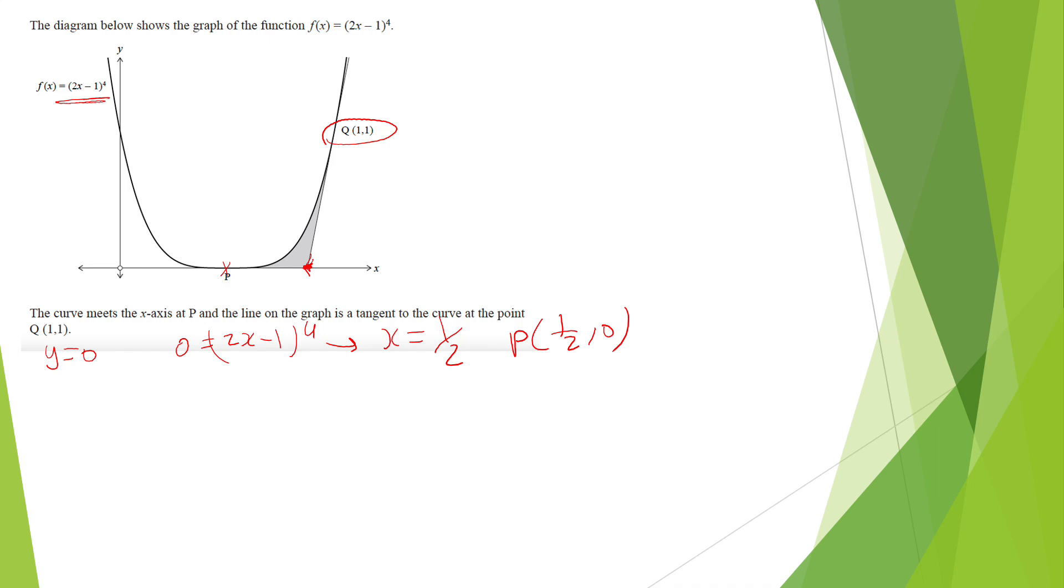Times differentiation of the inside, so I'll end up with 8. Now I'll substitute 1, so the gradient is 8 because 1 minus 1 to the power of 3 is just 1. Now I can use y minus 1 equals 8(x minus 1) to find the equation. And that's why the equation of the tangent is 8x minus 7.